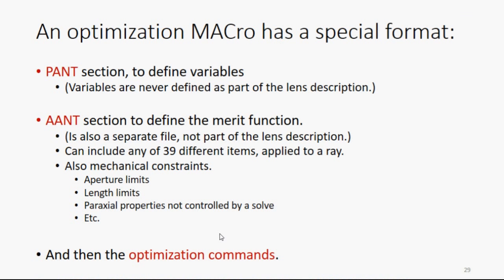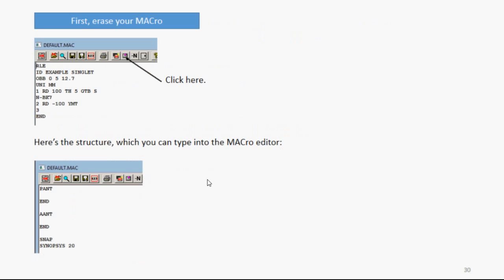We're going to make an optimization macro, which has a special format. It has a section called PANT, which is going to define the variables, and a section called ANT, which is going to define the merit function. And by the way, these sections are separate. They're never part of the lens description. The ANT section can include all kinds of things that apply to a given ray, mechanical constraints, just a whole bunch of stuff you can put in there, and you can have thousands of those on the merit function. It's a very flexible program. And then, of course, the optimization commands.